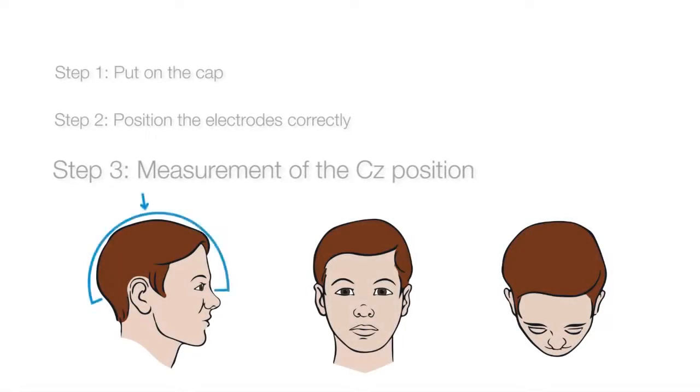Take the point halfway between the nasion and inion and the point halfway between the two pre-articular points. The vertex electrode CZ is positioned where these two points meet.